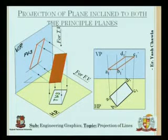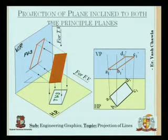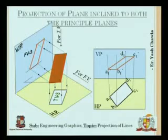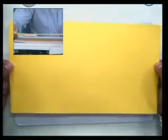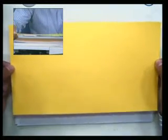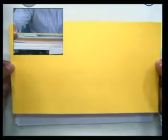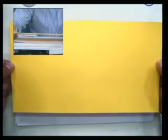The next case is that the plane makes an angle with both HP as well as VP. Right now it is parallel to HP and exactly perpendicular to VP. We will look at both views together for this case.